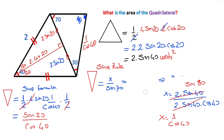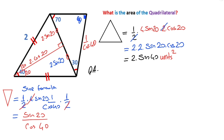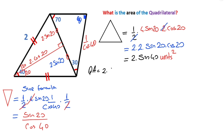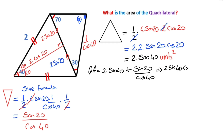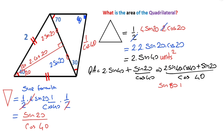Now we can calculate the quadrilateral area easily. Quadrilateral area = first triangle area + second triangle area = 2·sin40 + sin20 / cos40. Combining over a common denominator: (2·sin40·cos40 + sin20) / cos40 = (sin80 + sin20) / cos40.